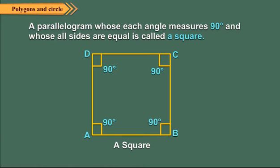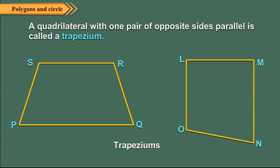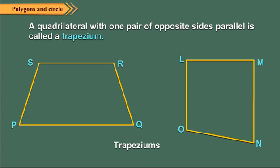So IJKL is a rhombus. A parallelogram whose each angle measures 90 degrees and whose all sides are equal is called a square. In the figure, ABCD is a parallelogram in which angle A equals angle B equals angle C equals angle D equals 90 degrees, and AB equals BC equals CD equals DA, so ABCD is a square. A quadrilateral with one pair of opposite sides parallel is called a trapezium. In the figure, PQ is parallel to RS, so it is a trapezium. Also in quadrilateral LMNO, LO is parallel to MN, so it is also a trapezium.